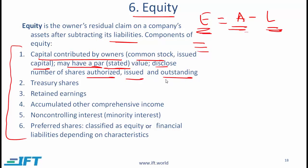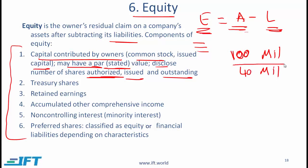When a company is created it has to state how many shares are authorized. Let's say that a company is started and the number of shares authorized is 100 million. This means that the company has the authorization to issue up to 100 million shares — it does not mean that 100 million shares will be issued immediately. Let's say that out of this 100 million, the company initially issues 40 million shares. Issued shares must be less than the number of shares authorized.